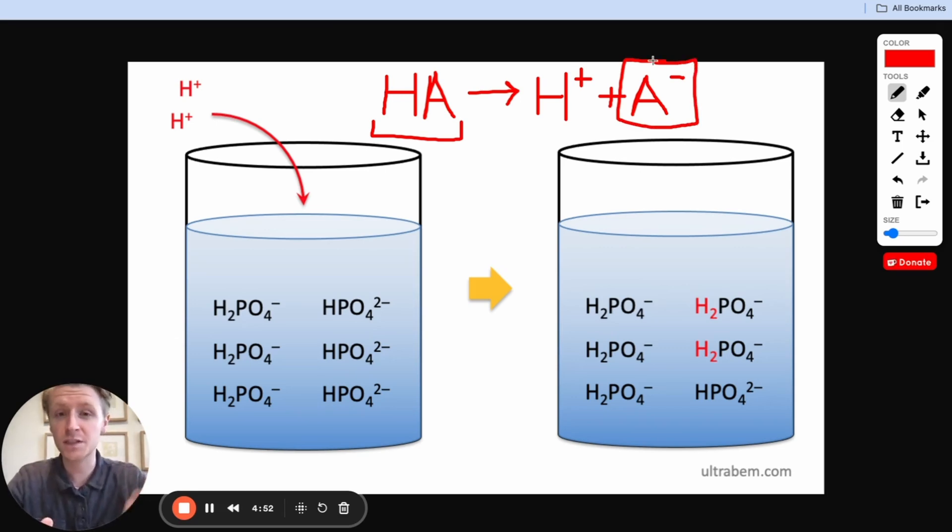Because remember, bases like to accept protons rather than donate them, bases like to pick them up. And theoretically, this A-, this conjugate base, could pick up a proton and then go back to being an acid again. But that only happens with weak acids and weak bases.